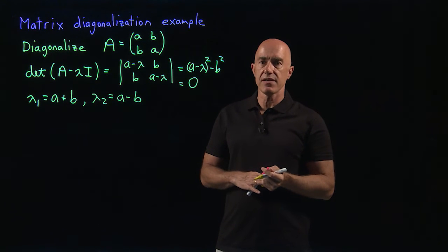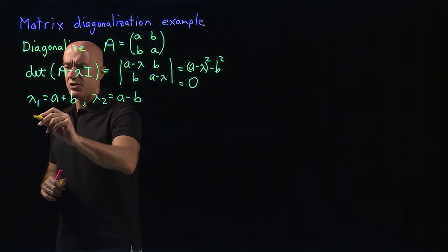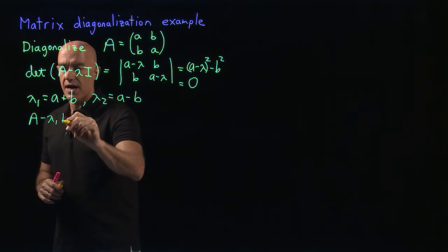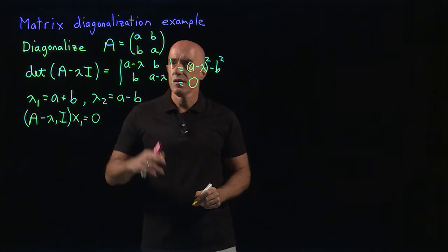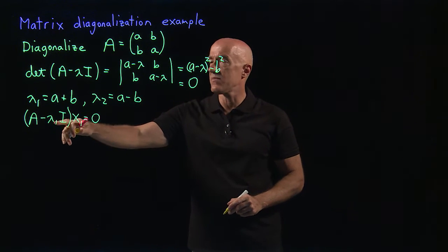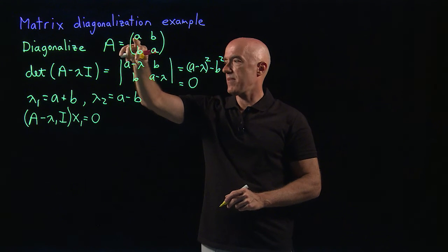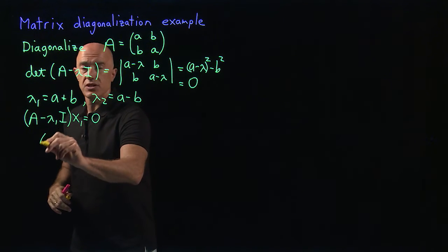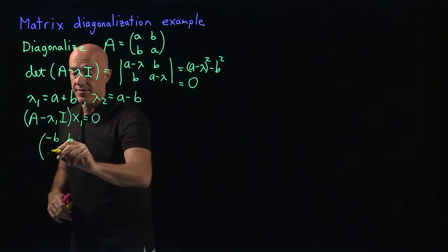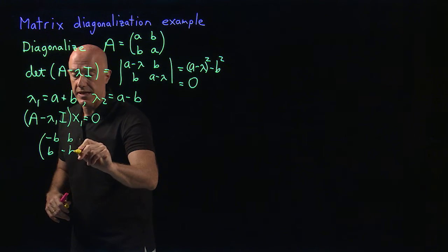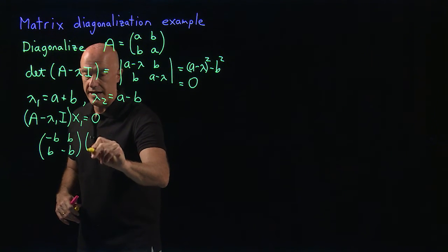Now we need the eigenvectors. We find the eigenvector for lambda one by solving the equation A minus lambda one I times eigenvector X1 equals zero. A minus lambda one I means subtracting A plus B from the diagonal, giving us the matrix with entries minus B, B, B, minus B.